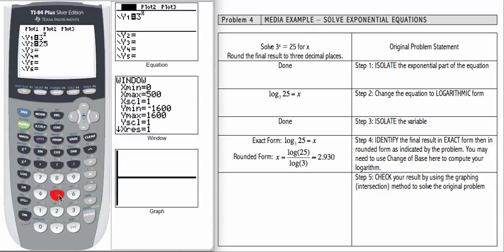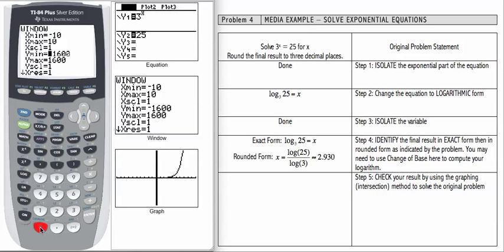As always, we want to check our window. In this case, for our input, let's use negative 10 to 10. This is not a real-world problem, so we could have potentially negative values for input. For output, it's an exponential function. We have a horizontal asymptote of the x-axis. So let's take y min of 0, y max of 30, and graph.